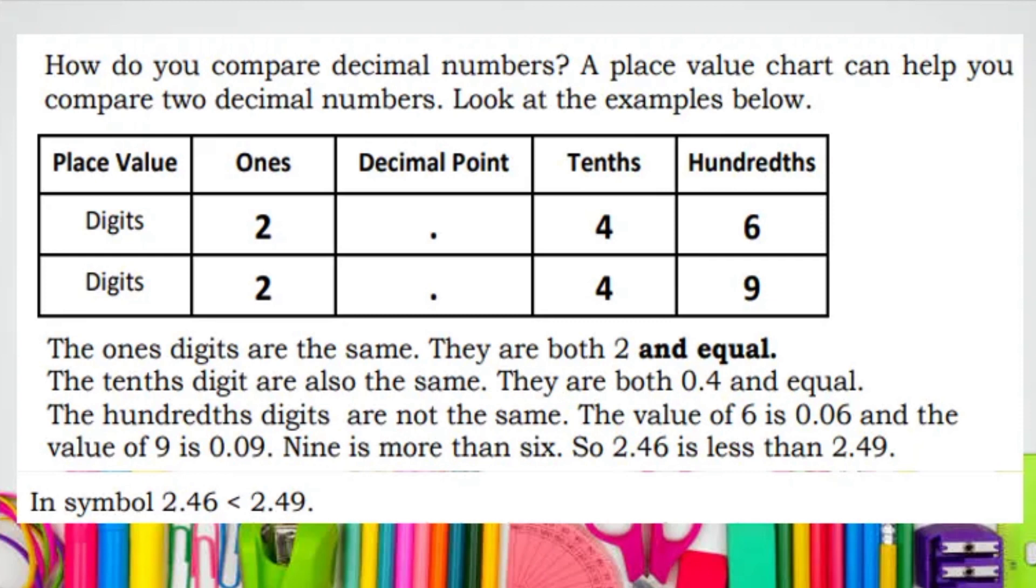The ones digits are the same. They are both 2 and equal. The tenths digits are also the same. They are both 0.4 and equal. The hundredths digits are not the same. The value of 6 is 0.06 and the value of 9 is 0.09. 9 is more than 6. So, 2.46 is less than 2.49.